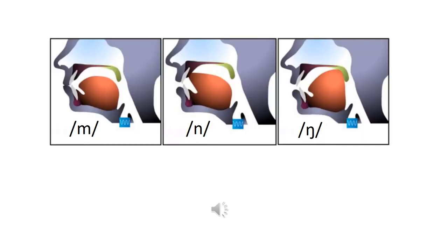In nasal consonants, airflow is blocked from exiting the mouth by a complete closure at some point in the oral cavity. This closure can occur at various places, leading to different types of nasal sounds. Bilabial closure at the lips results in the nasal consonant m, as heard in man. It corresponds to the bilabial plosives p and b.